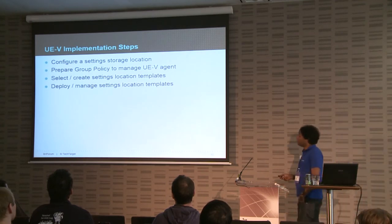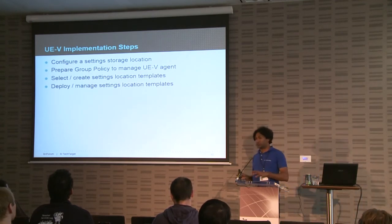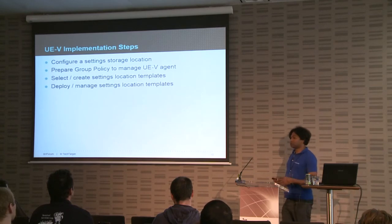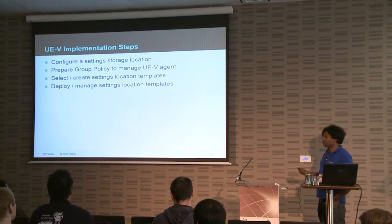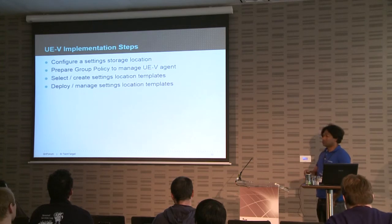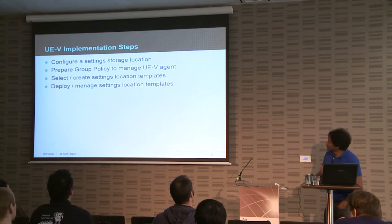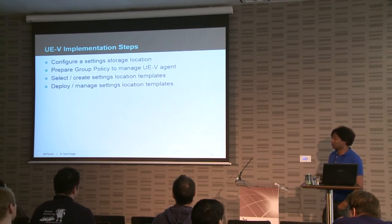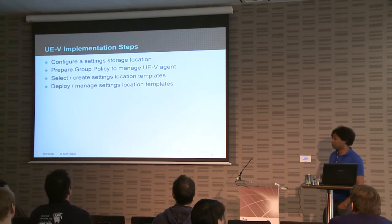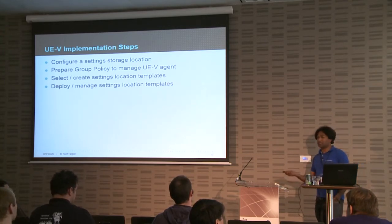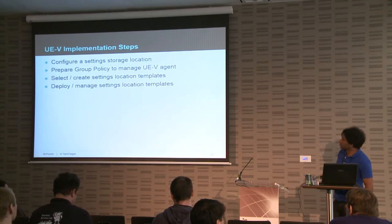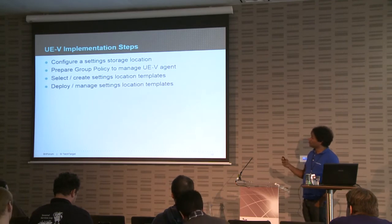The implementation of UEV: you configure a settings storage location — the file share where all the user folders and setting packages are created. You use group policy — we're all using group policy. You select and create templates; by default there are only a few minimal ones for the OS, Office 2007, Office 2010, and a couple of others like Lync 2010 and Calculator. And you can deploy and manage your settings location templates.